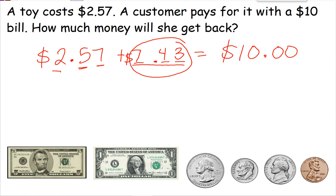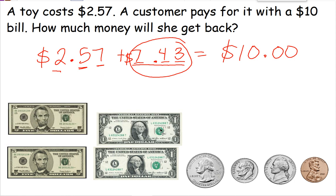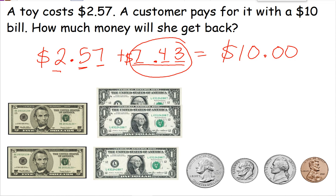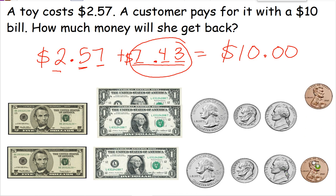Now to show that with money, they would end up having 1 five-dollar bill, 2 one-dollar bills, then 25, 35, 40, 41, 42, 43 cents. So the customer would get back a $5 bill, 2 $1 bills, 1 quarter, 1 dime, 1 nickel, and 3 pennies.